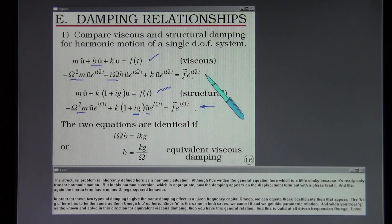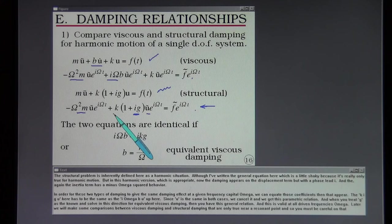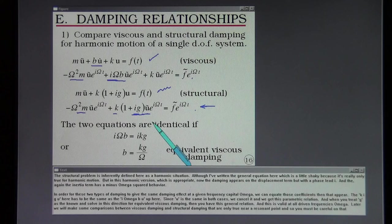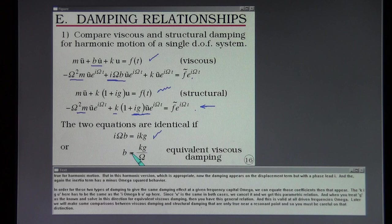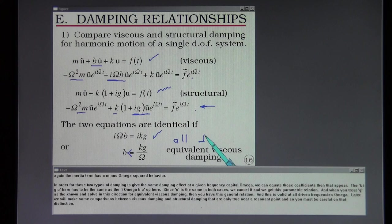And again the inertia term has a minus omega squared behavior. In order for these two types of damping to give the same damping effect at a given frequency capital omega we can equate those coefficients then that appear. The KiGU here has to be the same as the i omega BU up here. Since U is the same in both cases we cancel it and we get this parametric relation. And when you treat G as the known and solve in this direction for equivalent viscous damping then you have this general relation. And this is valid at all driven frequencies omega. Later we will make some comparisons between viscous damping and structural damping.